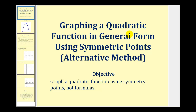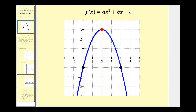Welcome to a lesson on graphing a quadratic function in general form using symmetric points. To get an idea of how this method works, let's look at the graph of a quadratic function. These two black points are symmetric points on the quadratic function because they're mirror images of one another across the red vertical line, which is the axis of symmetry.